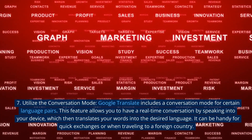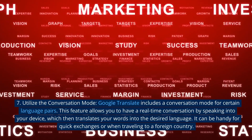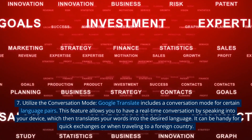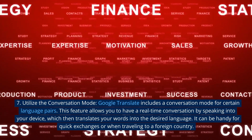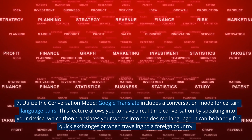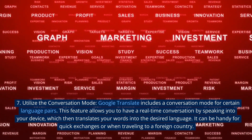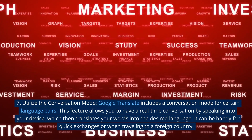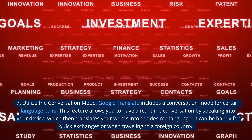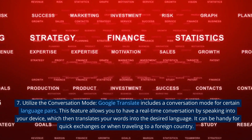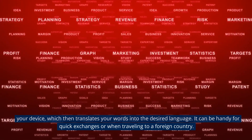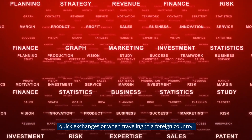7. Utilize the conversation mode. Google Translate includes a conversation mode for certain language pairs. This feature allows you to have a real-time conversation by speaking into your device, which then translates your words into the desired language. It can be handy for quick exchanges or when traveling to a foreign country.